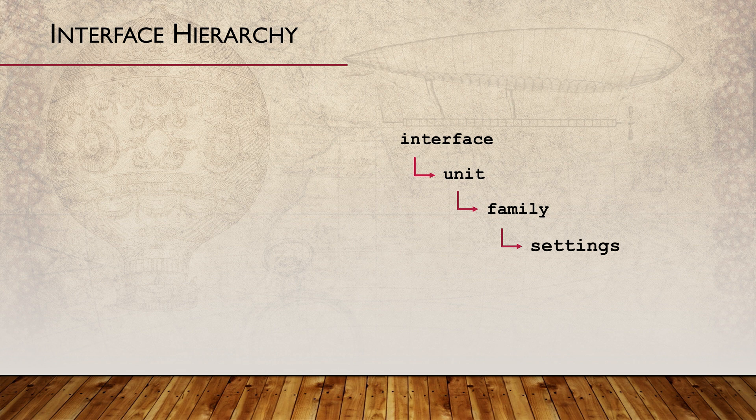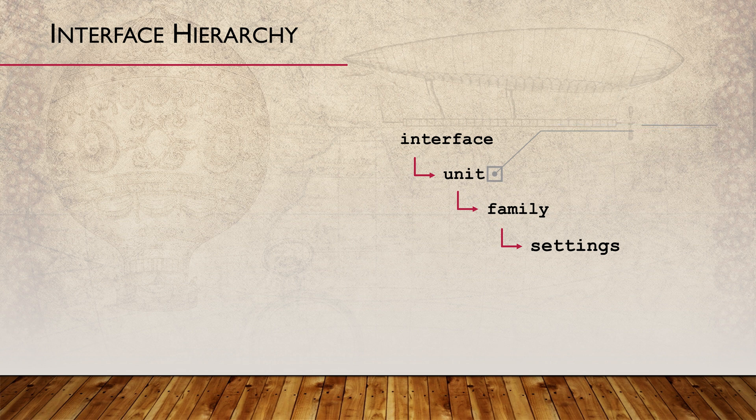This is also where a description goes. Most configuration goes within a container called a unit. A unit is a logical interface — the IFL we spoke about earlier. All logical configuration goes here and all interfaces must have them. Some devices, like regular switch ports, will only have one unit. Some interfaces, like PPP and HDLC, require that the unit number is always zero. In other cases, we can have multiple units per interface — this is how we create sub-interfaces based on VLANs.